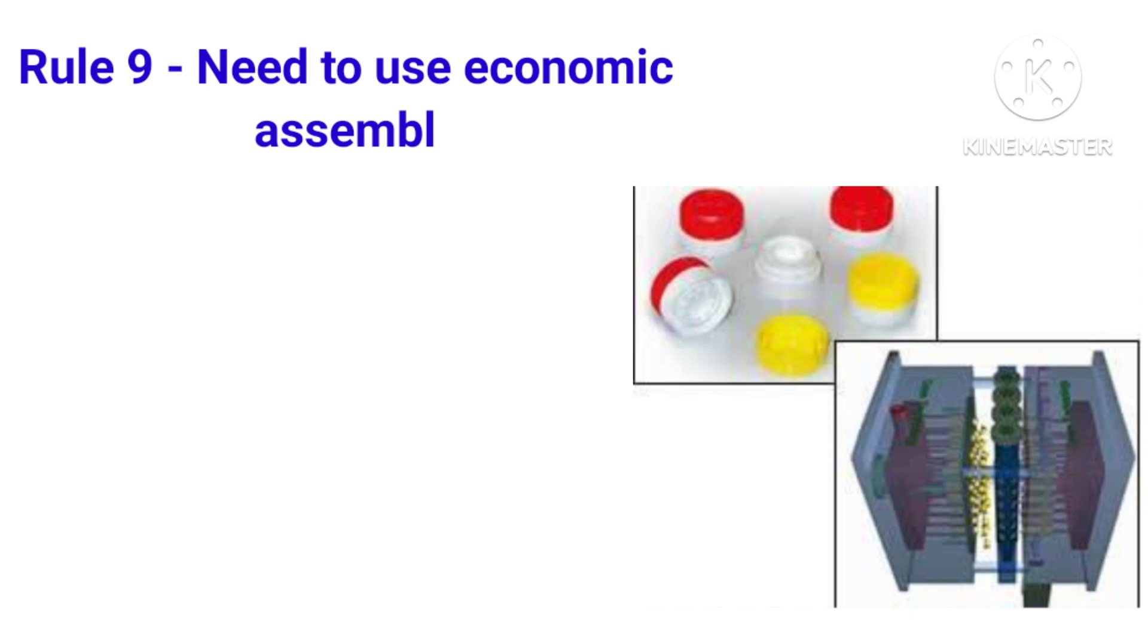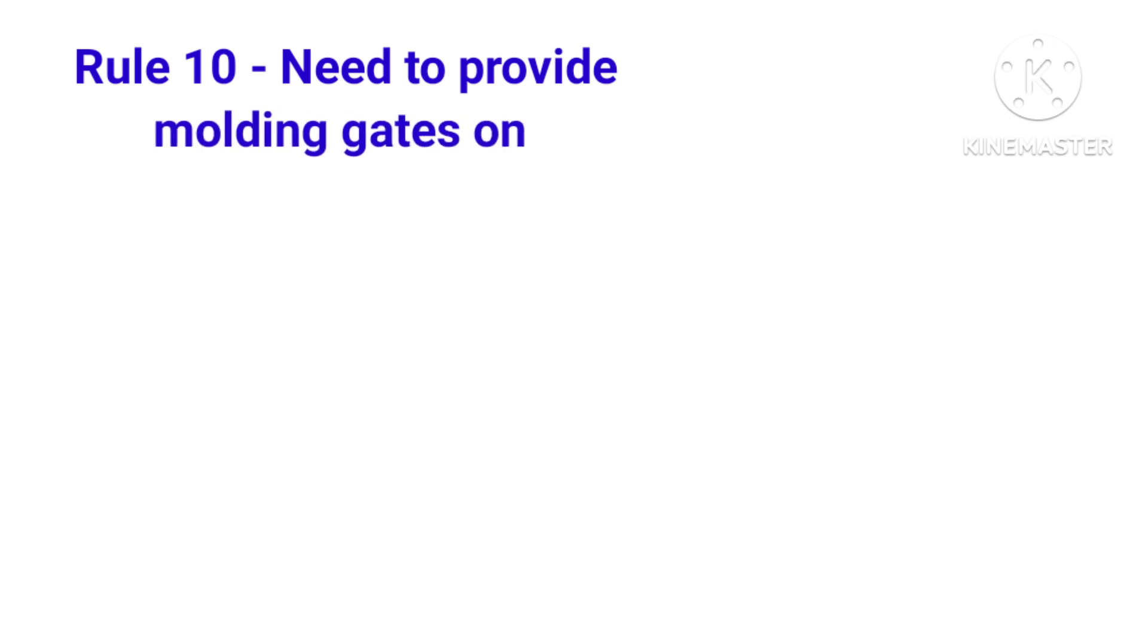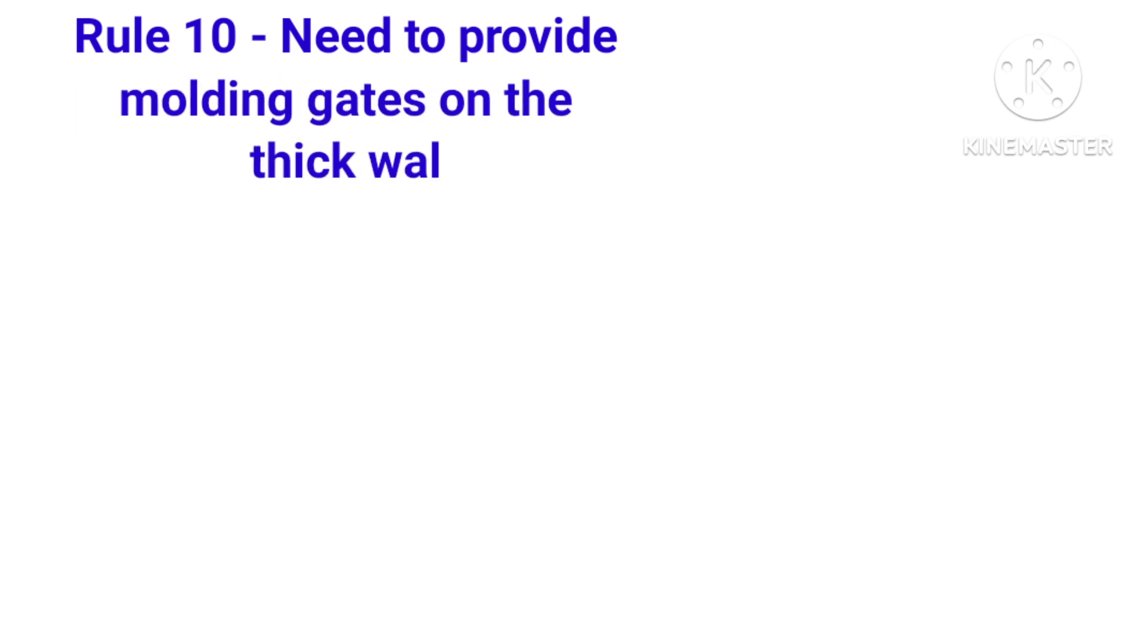Rule number ten is position of gate of molding on the thickest wall. That means we need to provide the gates on the thickest wall of the component.